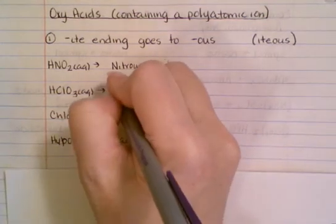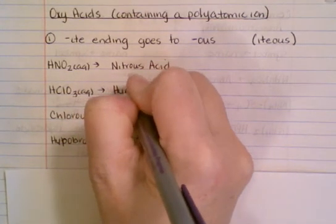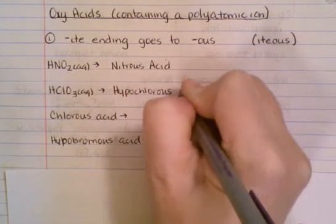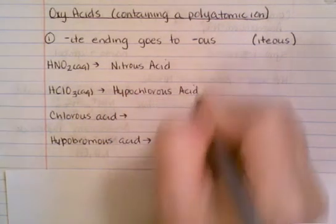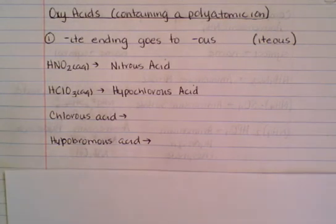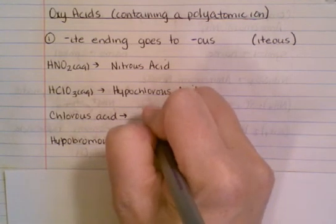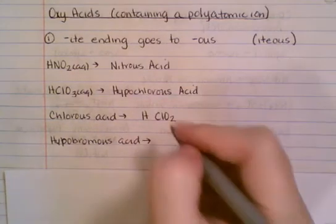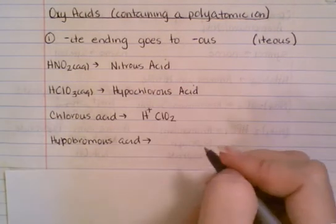Now what happens if I need to go the other way? Let's say that I give you chlorous acid. Well, chlorous came from chlorite, and chlorite is CLO2. I know that it starts with an H. The charge on hydrogen is always a plus one, the charge on the CLO2 is a minus one.